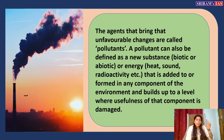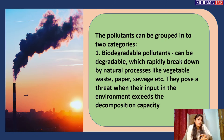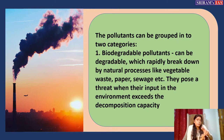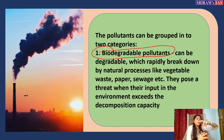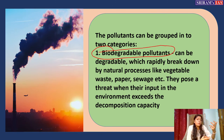Pollutants can be classified in many ways, but the two types you must remember are biodegradable and non-biodegradable pollutants. Biodegradable pollutants are those which break down or decompose quickly by natural processes — for example, paper derived from wood decomposes very fast and does not pose a major threat to the environment.